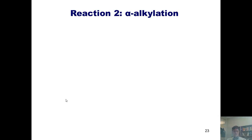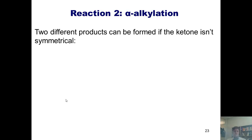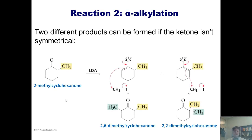When you perform an alpha-alkylation on a ketone that isn't symmetrical, two potential products can arise — and in fact, you could potentially get even more than that. If I began with this 2-methylcyclohexanone and treated it with LDA, I would get potentially two different enolates.